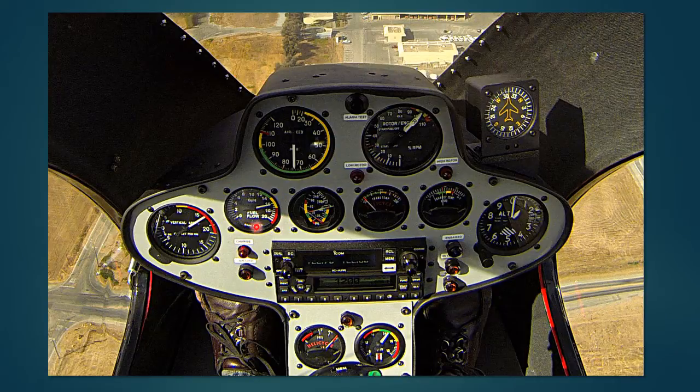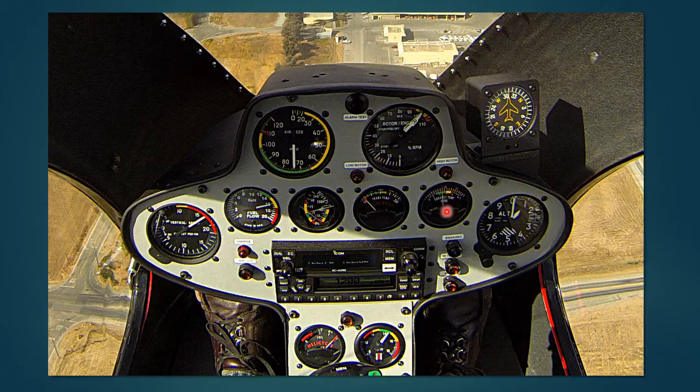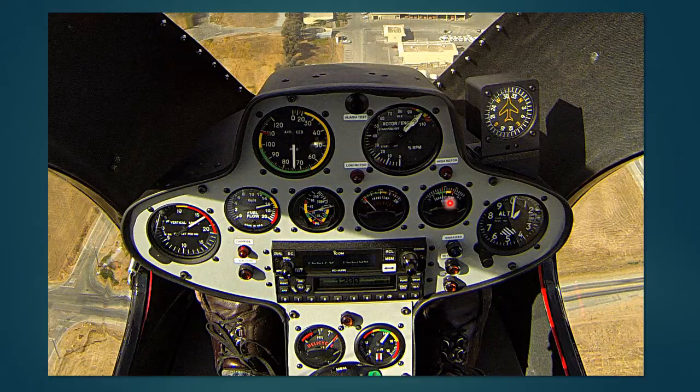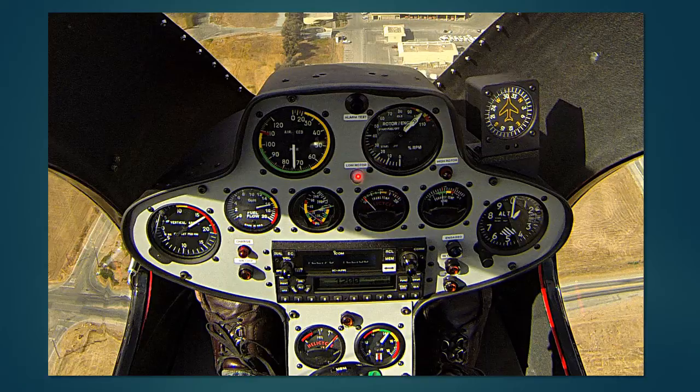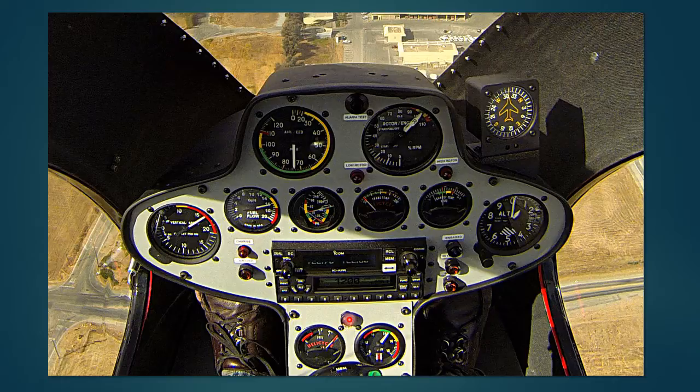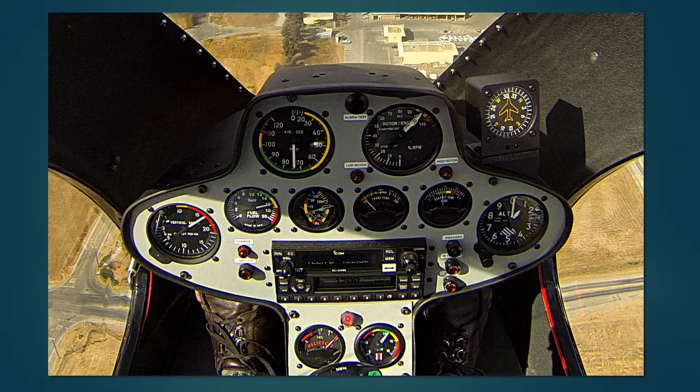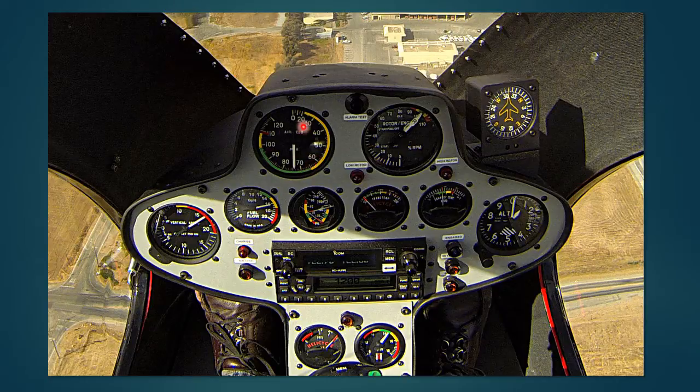This is the fuel flow indicator and you're looking at a little over 16 gallons per hour. Over here is my exhaust gas temperature and this is indicating about 900 degrees. The two warning lamps to keep track of are the low rotor up here and engine RPM warning down here. This one will go off if the engine RPM is either too low or too high.